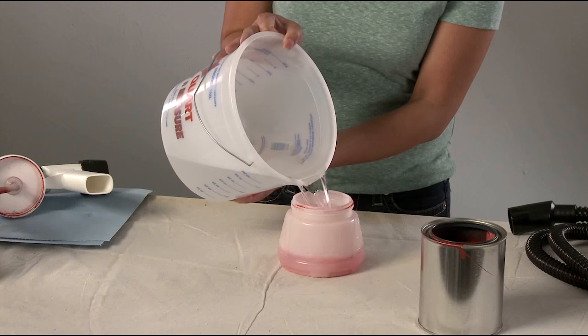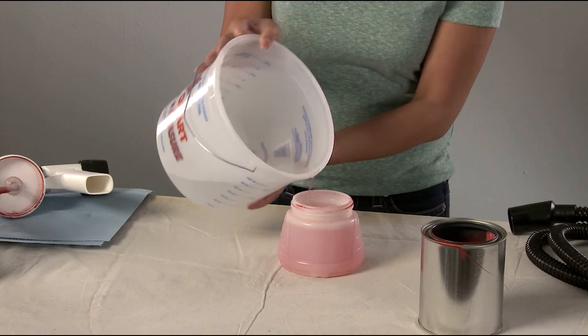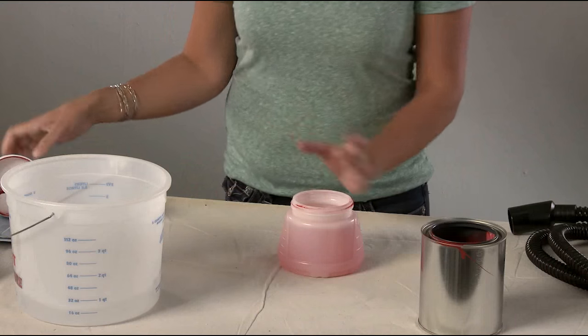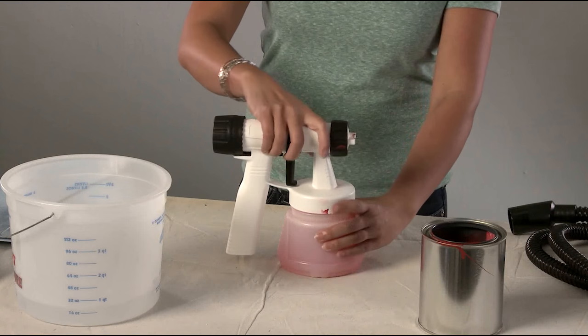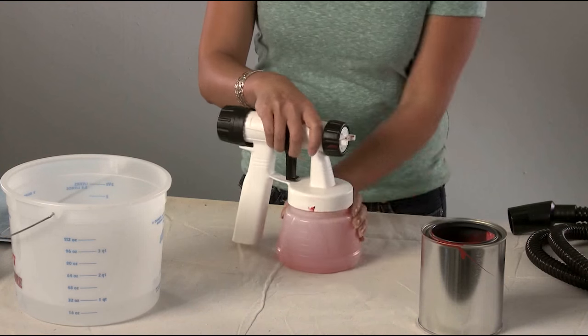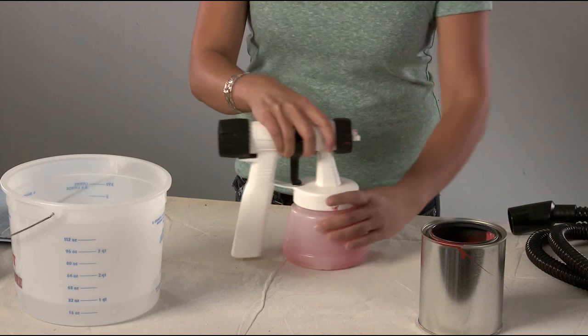Refill the cup with the appropriate cleaning solution: water for water-based materials, mineral spirits for oil-based materials. Screw the cup back onto the gun, attach the hose, and turn the power on.